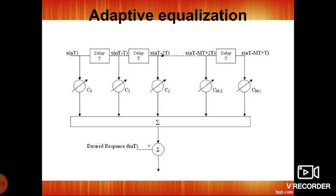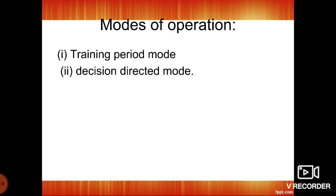The diagram for adaptive equalization shows the tapped delay line with coefficients C0, C1, C2, up to Cm-1. The digitized input signal is Xn(t). When delayed by t, it becomes X(n)(t − T), and delayed again becomes X(n)(t − 2T), and so on. The desired response is added and finally we get the output.